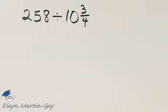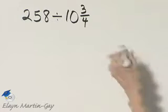To find out how many miles we could expect to travel on one gallon, we need to know how many 10 and 3 fourths there are in 258. That means we divide. So let's go ahead and divide.